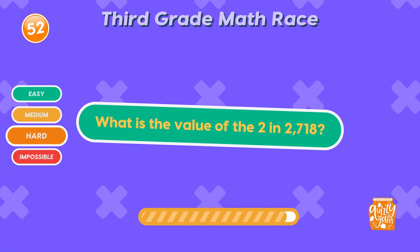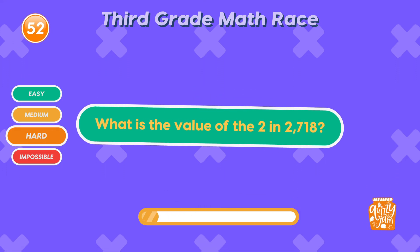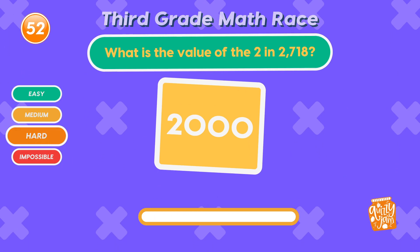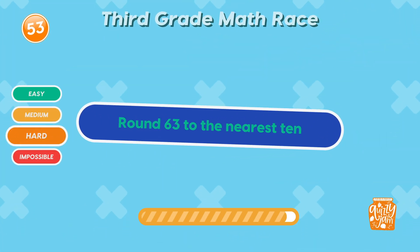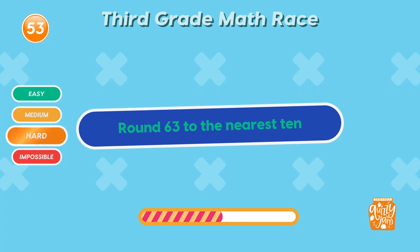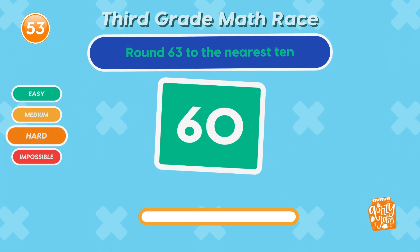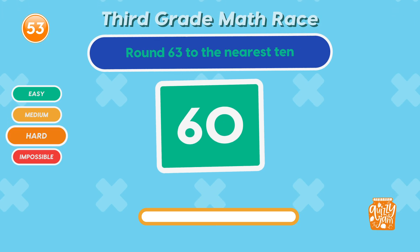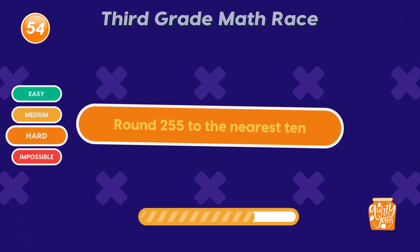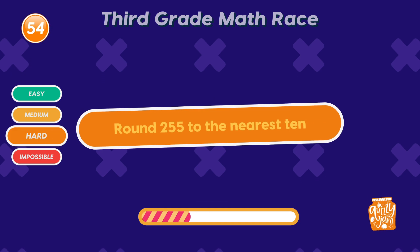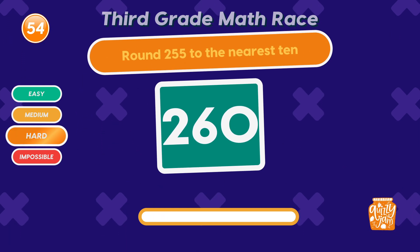What is the value of the 2 in 2,718? 2,000! Thousands of brilliance! Round 63 to the nearest ten. 60! Rounding it out just right! Round 255 to the nearest ten. 260! Ten point accuracy!